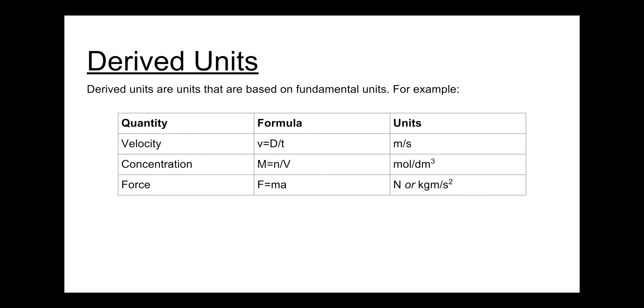Derived units are expressed in fundamental units. Some examples of the derived units are meters per second which is used for velocity, moles per decimeter cubed which is the units for concentration, and newtons which is actually kilogram meter per second squared which is used to represent force.